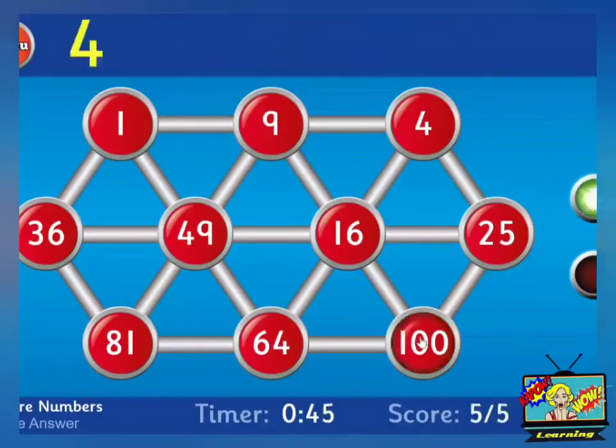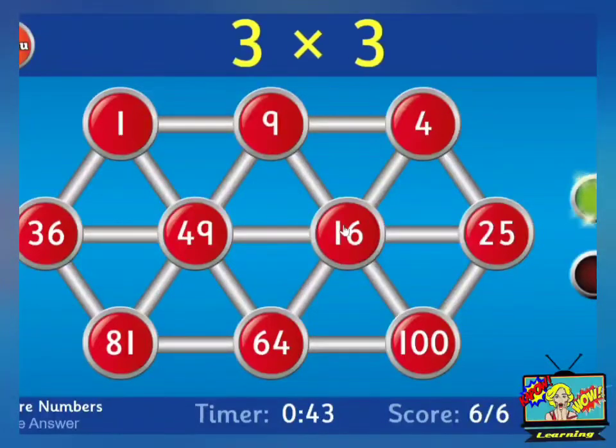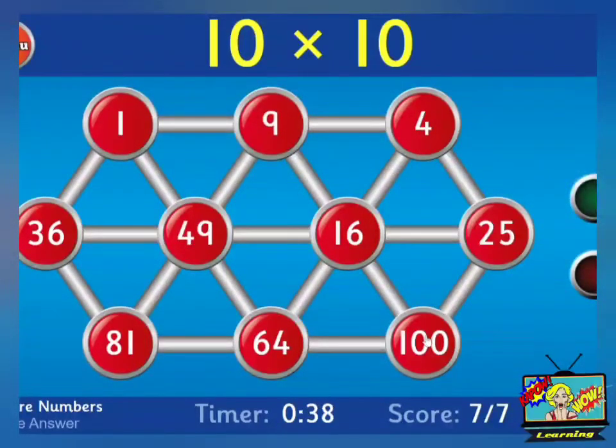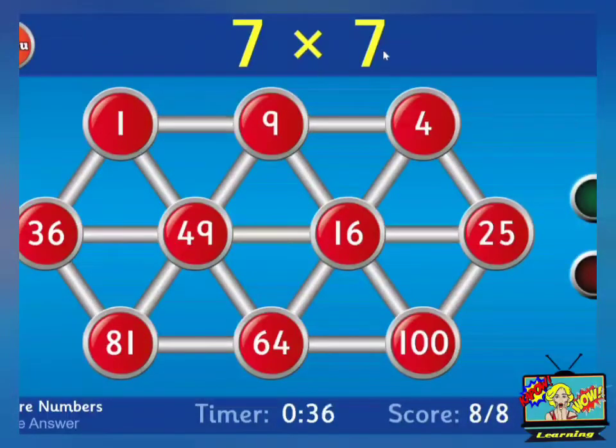10 times 10 is 100, that's a square number. 4 times 4 is 16, that's a square number. 3 times 3 is 9, that's a square number. 10 times 10 is 100. 7 times 7 is 49. 2 times 2 is 4.